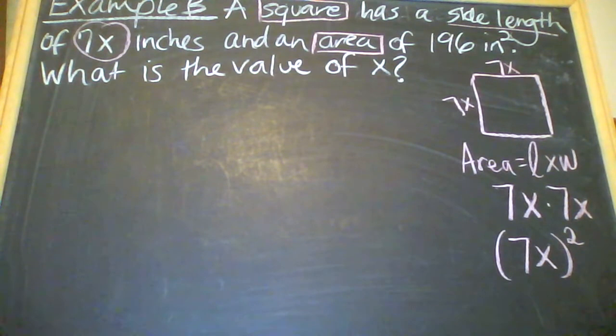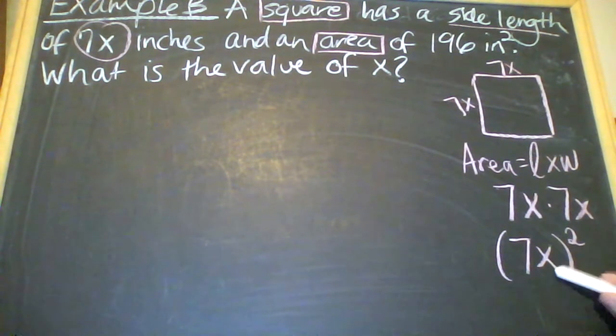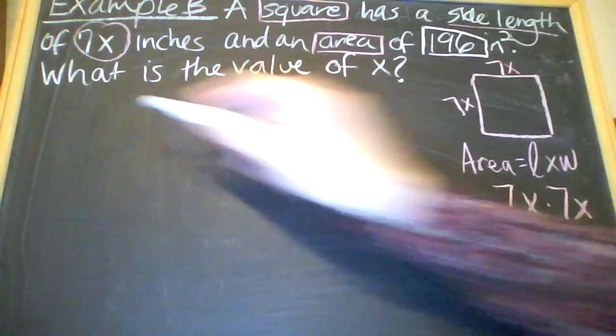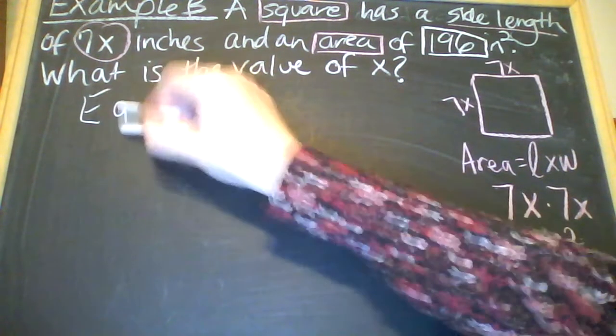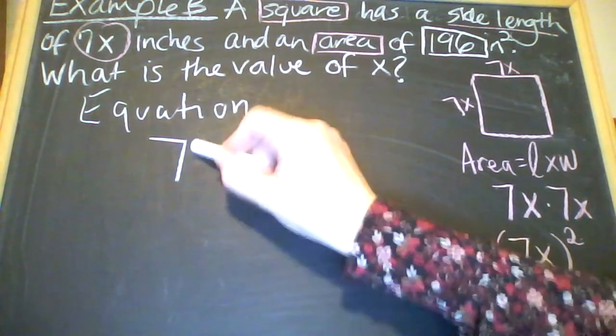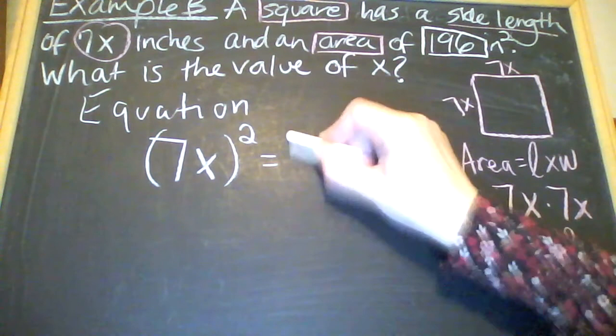So we're going to go through and set up our equation at this point, because we're given two expressions for the area of the square: 7x to the second power and 196. So we're going to write our equation: 7x to the second power equals 196.